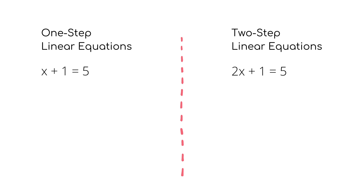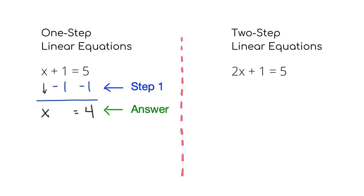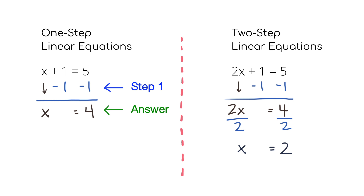These equations are called two-step equations because it takes two steps to solve them. For example, the one-step equation on the left only takes one step — subtracting one — but for the two-step equation on the right you need to subtract one and divide by two. Regardless, your end goal is always the same: isolate X and figure out what number that letter X equals.